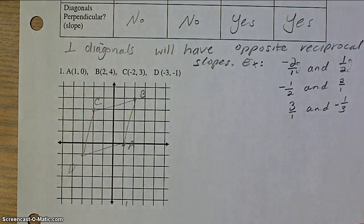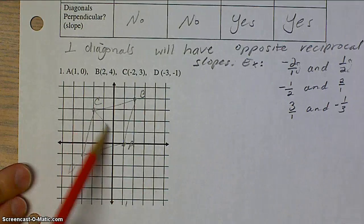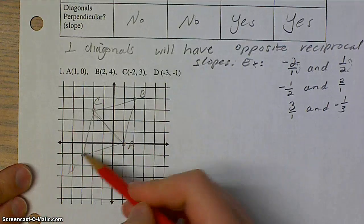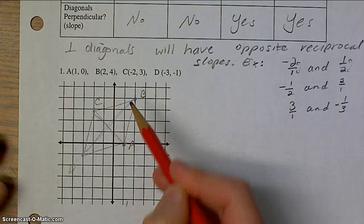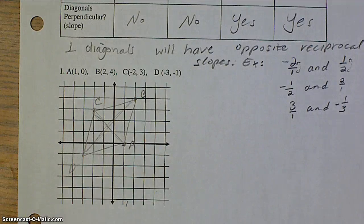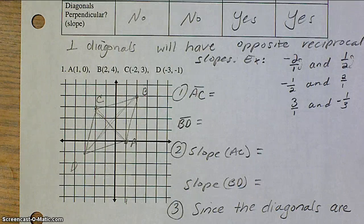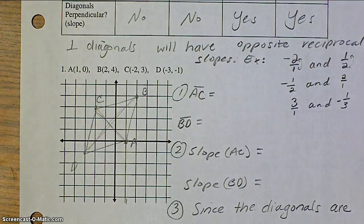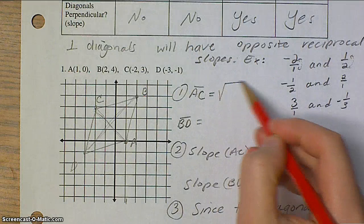Graph your points. Then, you can figure out your diagonals. I'll give you a second to go ahead and do that and catch up. When you're ready, resume the video. Then set up your three steps. First step, calculate the distances of both the diagonals using the distance formula.